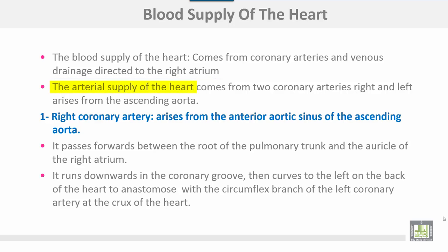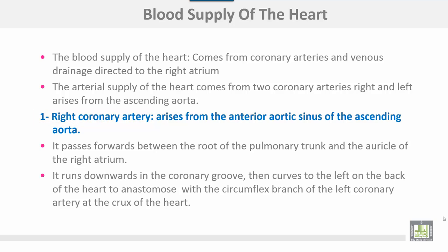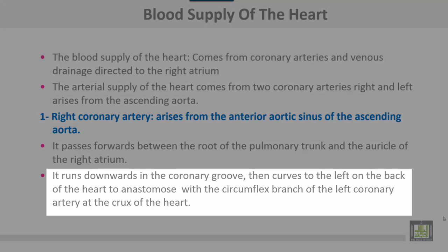The arterial supply of the heart comes from two coronary arteries, right and left, which arise from the ascending aorta. The right coronary artery arises from the anterior aortic sinus of the ascending aorta and passes forwards between the root of the pulmonary trunk and the auricle of the right atrium.